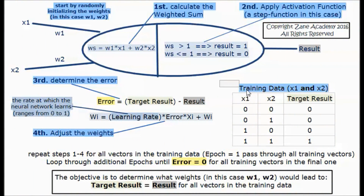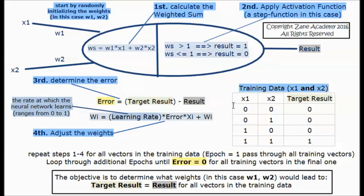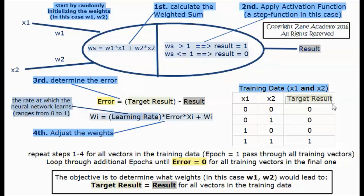The training data used here is x1 and x2. If either or both x1 and x2 is 0, this would give us 0, and if both x1 and x2 are 1, this would give us 1. This is the target result, and we will start by randomly initializing the weights.